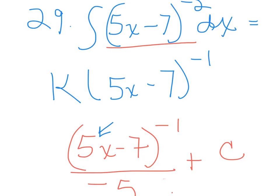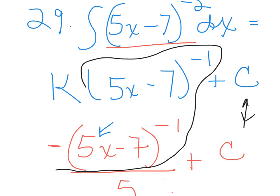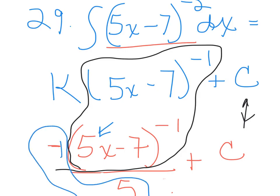Number two: anti-differentiation of an indefinite integral. We are currently doing indefinite integrals. An indefinite integral means your integration symbol has no numbers on either end. Everything we've done thus far has been indefinite. When you take an anti-differentiation of an indefinite integral, remember to always add the constant of integration.